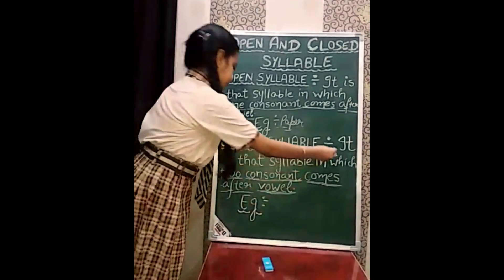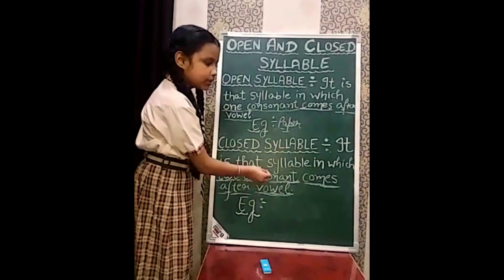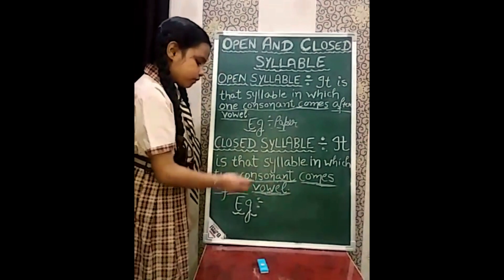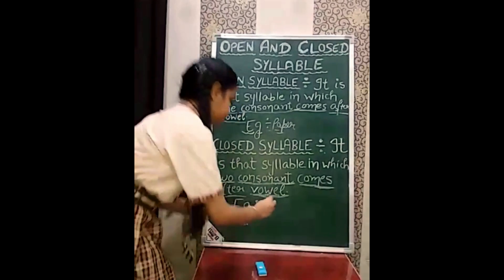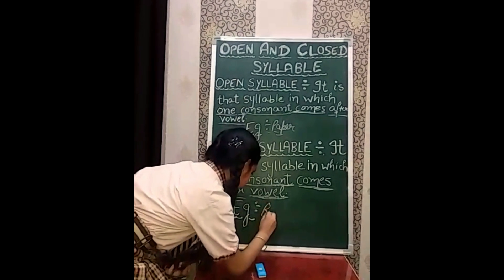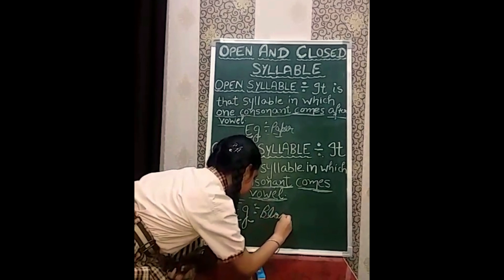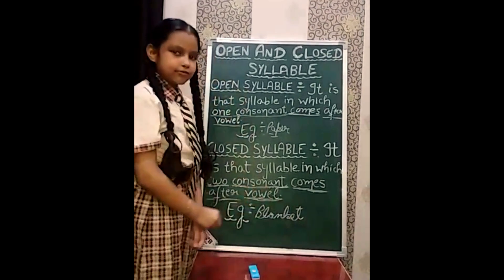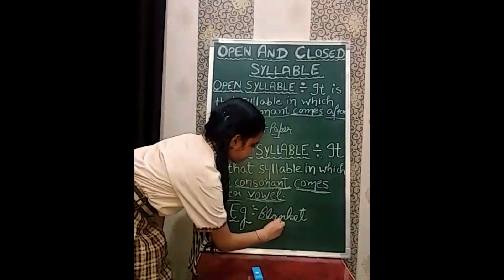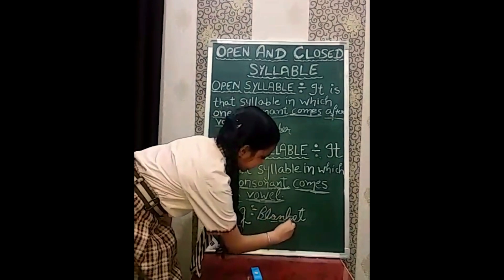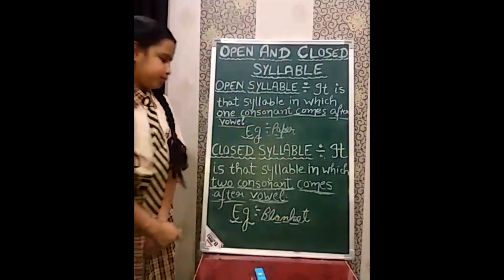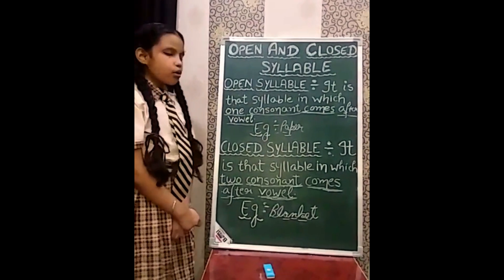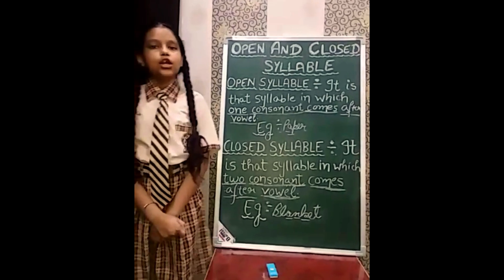Next, closed syllable. It is a syllable in which two consonants come after a vowel. For example, the word 'blanket' — A is a vowel and N is a consonant, and two consonants come after a vowel. That is called a closed syllable.